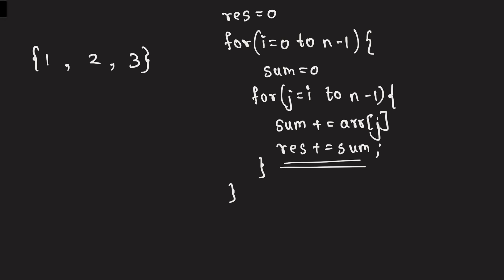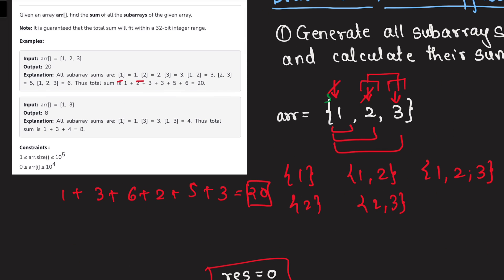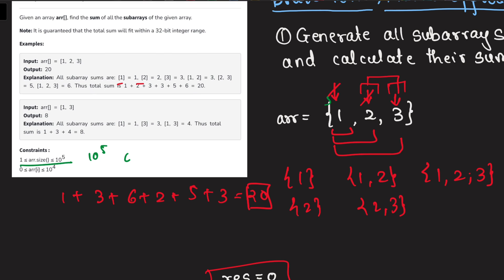For the brute force solution, we have two nested loops — one tracked by i, which picks the starting index for the subarray, and one tracked by j, which picks the ending index. We also have a sum variable tracking the running sum for subarrays starting at index i. Both loops run O(n) time, so the overall time complexity is O(n²). Since the array size can be up to 10^5, an O(n²) algorithm will result in a time limit exceeded, so we need to solve it in O(n) or O(n log n) time.